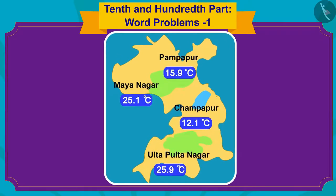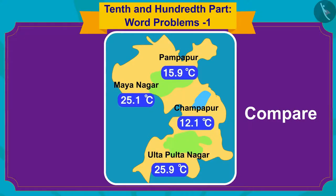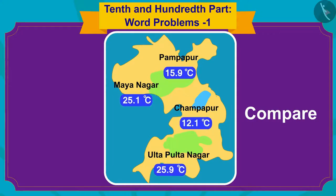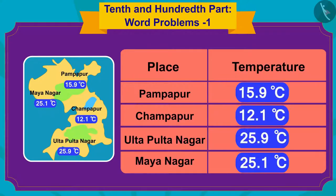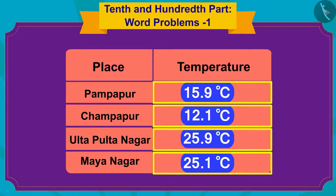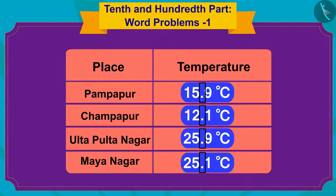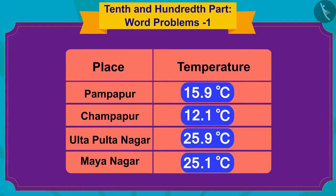Children, let us help Bunny. To find the place with the highest temperature, we have to compare the temperatures in degrees Celsius shown for these places. Whenever we want to compare numbers written in decimal, we will compare the numbers written to the left of the decimal point first, and then compare the numbers written on the right, or the 10th place.